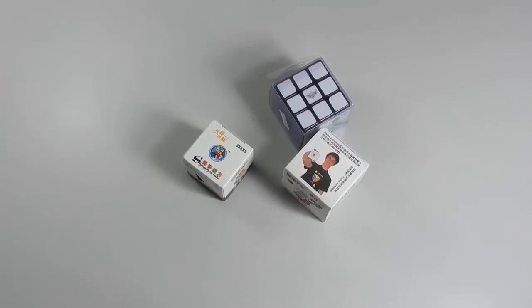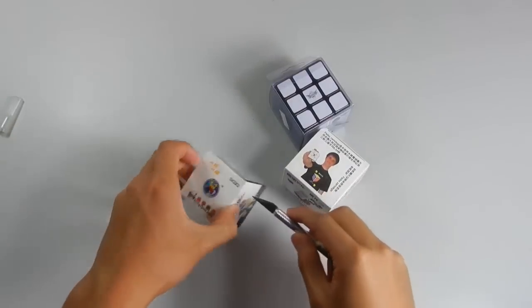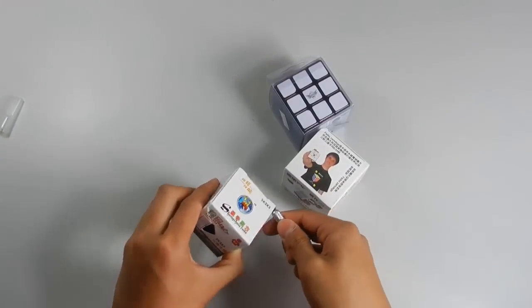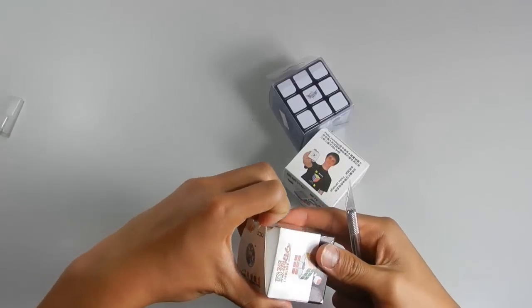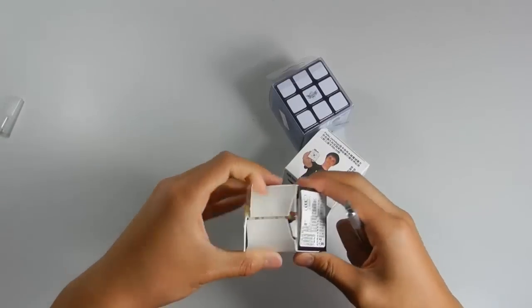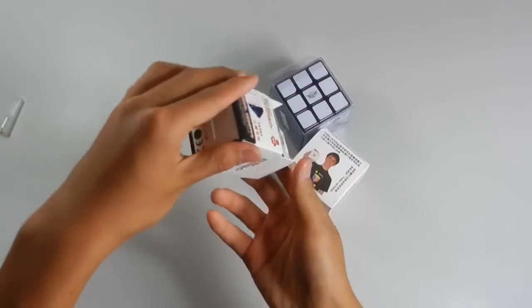So let's start with the Shang Shao 2x2 because it's the smallest and I'm a bit excited for this cube. Let's take a look. Oh no, it's a 3x3. My bad. Wow, how did I fail that? It's the 3x3, not the 2x2.